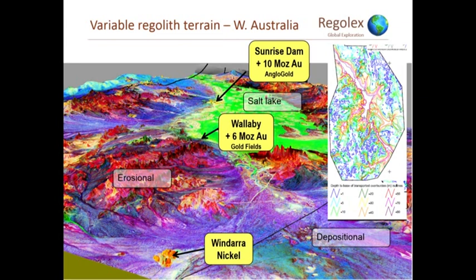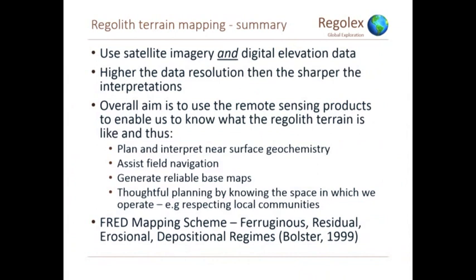Use satellite imagery and digital elevation models — the higher the resolution, the sharper the interpretations and the better the results. The overall aim of these remote sensing products is to enable us to know what the regolith terrain is like so we can plan and interpret the surface geochemistry. It helps with field navigation, generating good base maps, and thoughtful planning — we know where the villages are and whether we're going to be impacting anyone's crops. I do something which I call the FRED scheme — the Ferruginous Residual Erosional Depositional Regime — which I presented at an AIG meeting in 1999.